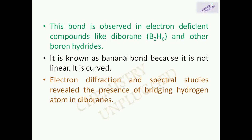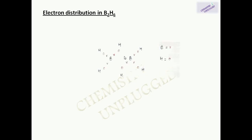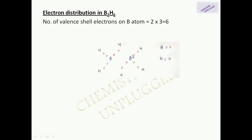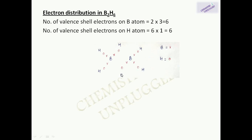Our first example is B₂H₆. Let's find out the electron distribution in B₂H₆. There are three valence electrons in a boron atom, and in B₂H₆ there are two boron atoms, so the total number of valence electrons from boron is six. The number of valence electrons from the six hydrogen atoms is also six, since each hydrogen has one valence electron.